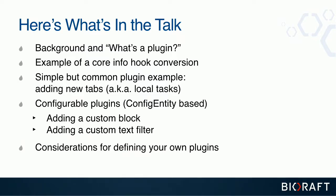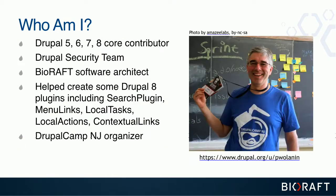I'll show where code from a Drupal 7 info hook and its corresponding implementation hooks went in Drupal 8 plugins. Then I'll show code for a custom module: implementing local tasks as tabs, defining a custom block, a custom text filter, and finally some best practices if you want your module to define its own plugin type. I've been a Drupal core contributor since Drupal 5, I'm on the Drupal security team, and I helped write the local tasks and other menu-related plugins we'll be discussing.